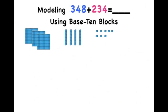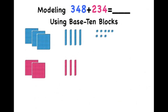Now, let's build 234 using our base-10 blocks. 234 has two hundreds, three tens, and four ones.